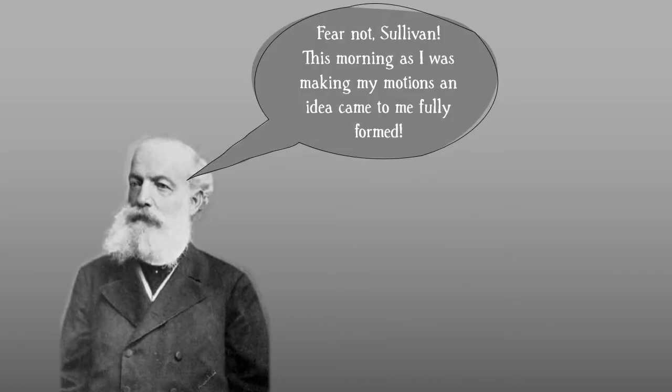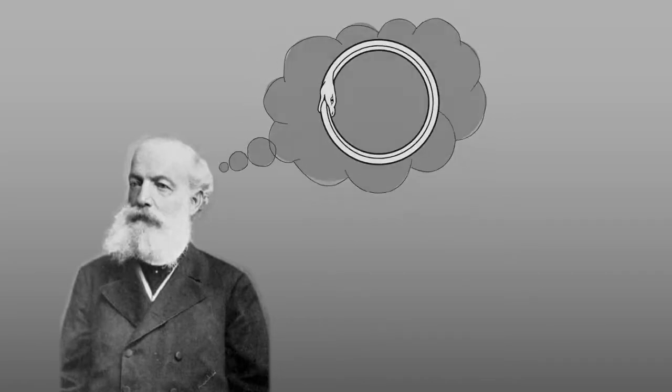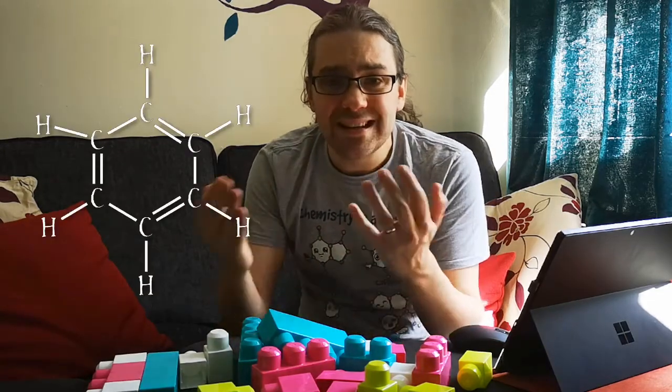Kekulé is mostly famous for working out the structure of benzene in 1865. His story, if you believe what he said about it years later, goes that he was daydreaming and imagined a snake eating its own tail or the Ouroboros symbol, and then he decided that benzene must have a ring-like structure because that's the only structure that satisfies everything we know about it. And it does. It's quite an insight made all the more amazing by what we had to go on at the time.